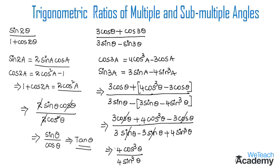The 4 in the numerator and denominator cancels, giving cos³θ / sin³θ, which is cot³θ. So cot³θ is the value of (3cosθ + cos3θ) / (3sinθ − sin3θ).